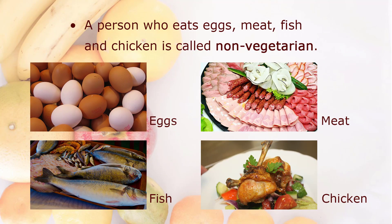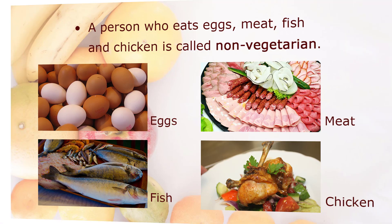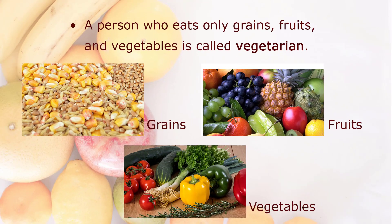A person who eats eggs, meat, fish, and chicken is called non-vegetarian. A person who eats only grains, fruits, and vegetables is called vegetarian.